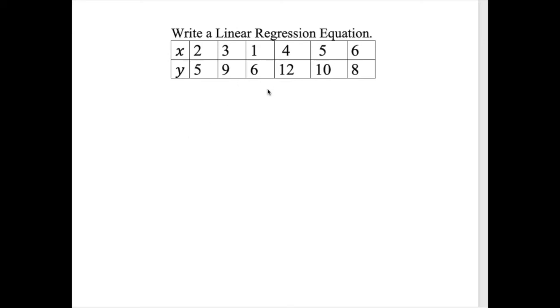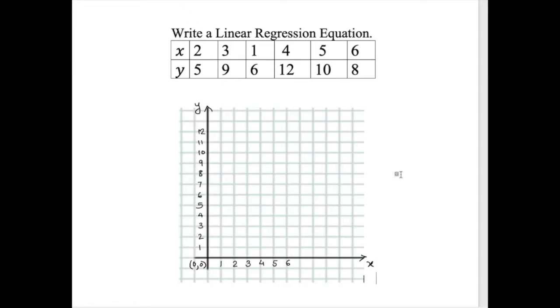Let's look at the scattergram — how this data shows up visually. In order to graph we need x and y, and clearly we have both. For x, I label level one through six, and I can clearly see one, two, six. The y-axis always goes up and down.